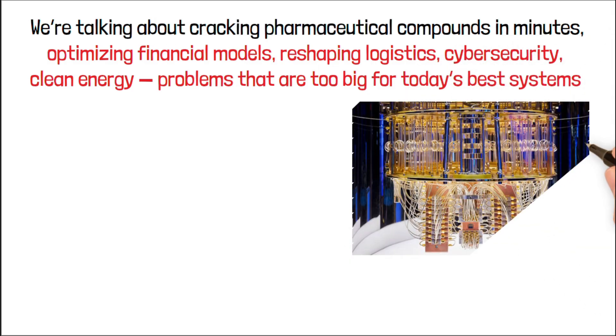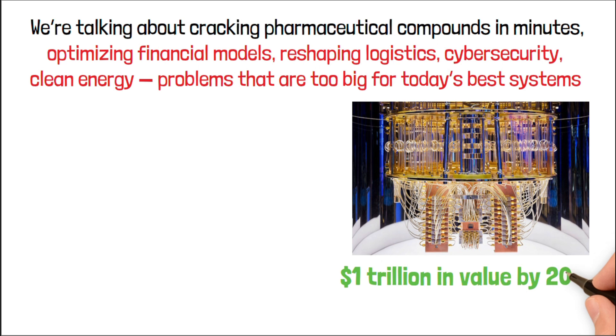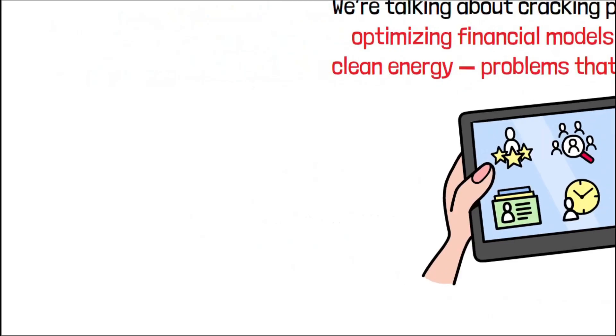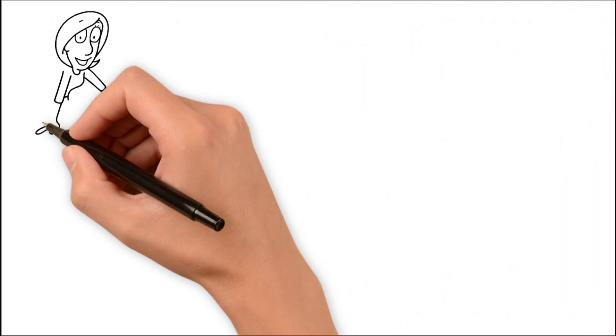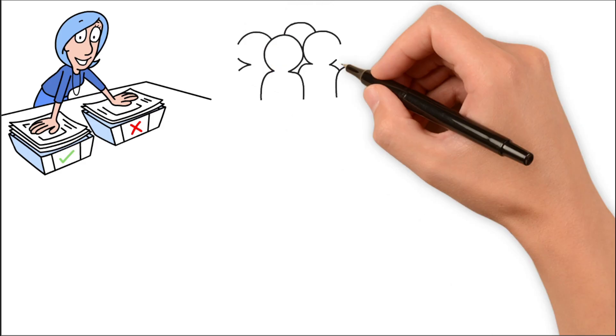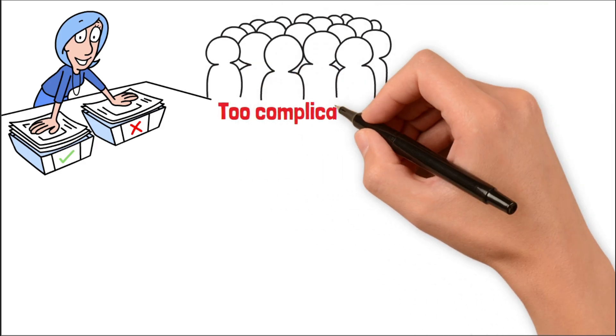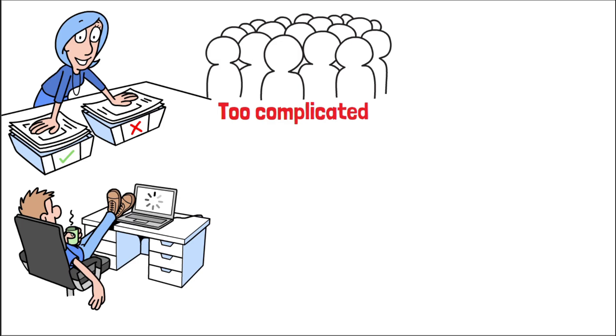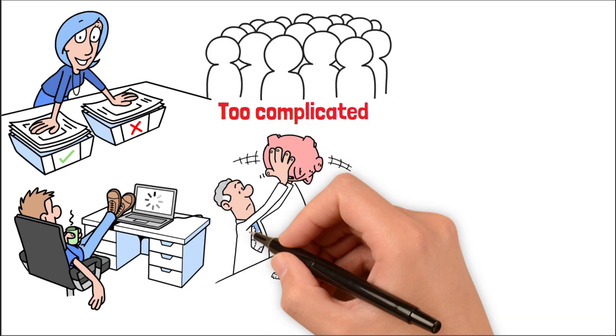According to leading experts, quantum computing could unlock over $1 trillion in value by 2035. And the companies building that future? Some of them are still under the radar. Now, here's where the emotional contrast kicks in. You've got two types of investors right now. One group sees quantum as too complicated, so they ignore it. They'll wait until it's on CNBC and everyone else is talking about it. By then, the returns will be gone.